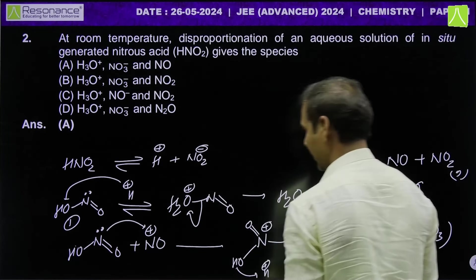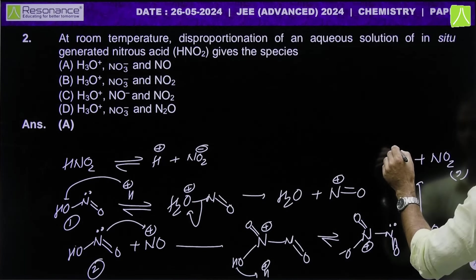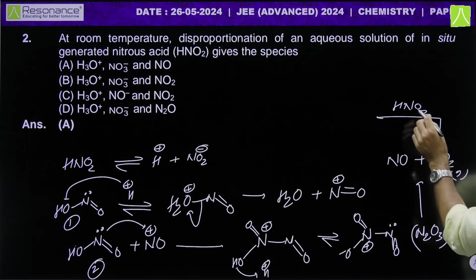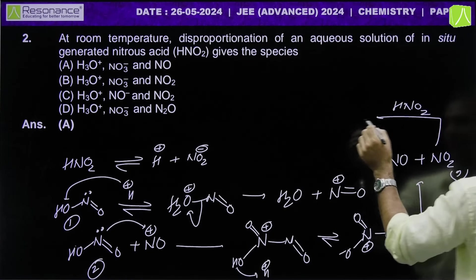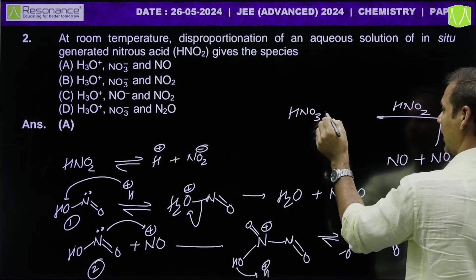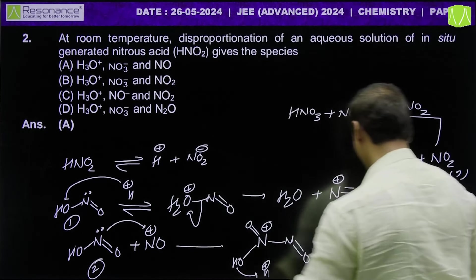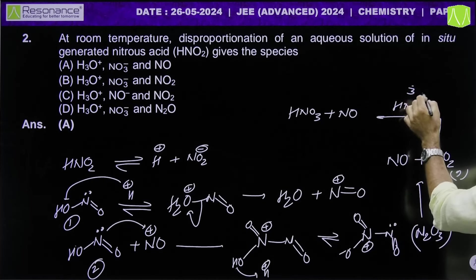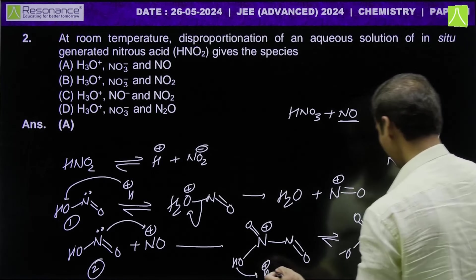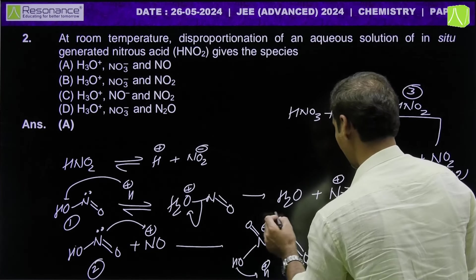HNO2 is present here, and the third mole is consumed. Finally, 3 mol HNO2 gives 1 mol HNO3 and 2 mol NO — 1 mol here and 1 mol here — plus 1 mol water. This is the overall balanced disproportionation: 3HNO2 → HNO3 + 2NO + H2O.